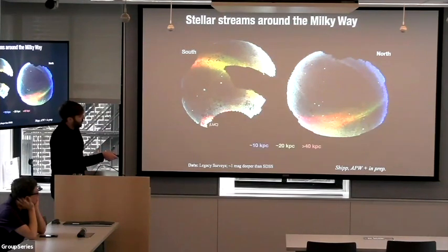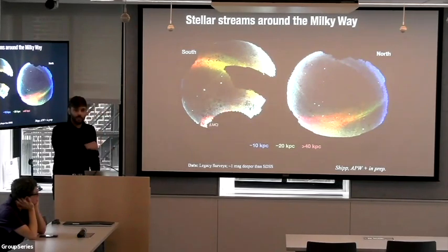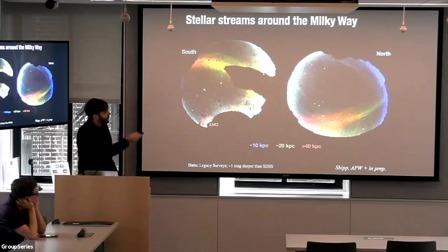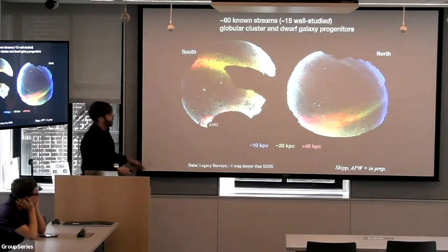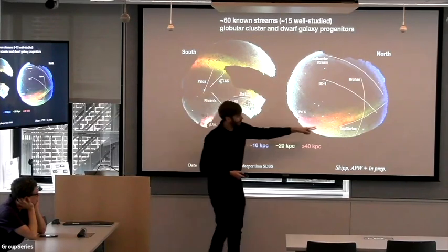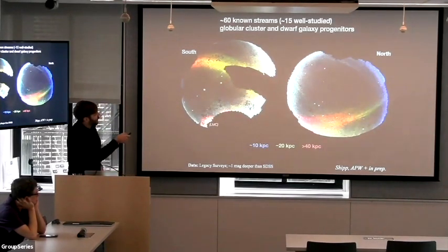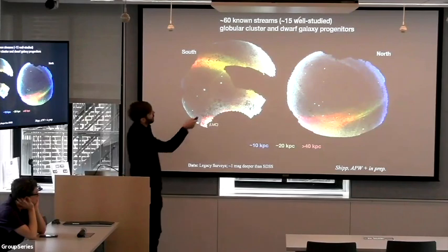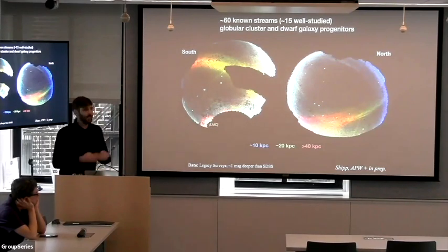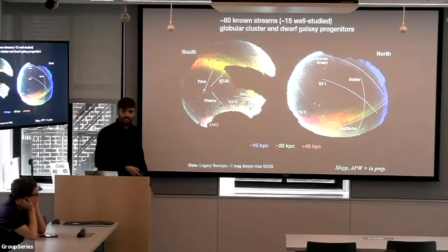This is some recent work I've been doing with a grad student at Chicago, Nora Shipp, who was visiting here last week. There's lots of interesting substructure here — these are the things I'm tracing out as streams. To give you an idea of the demographics, there are about 60 streams that we think are candidate disrupted objects around the Milky Way, and about 15 of those are close enough or dense enough that they've been well studied — we have spectra, etc.